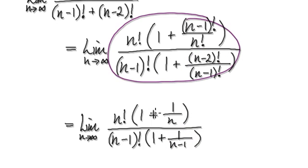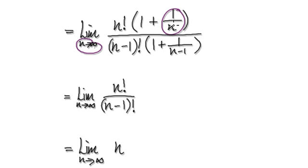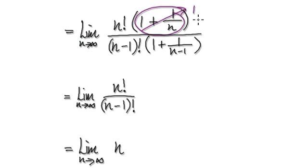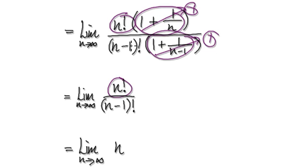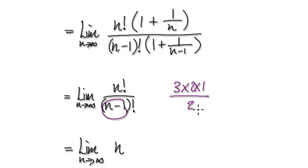This whole thing here simplifies to the tidied expression. Now as n tends to infinity, the 1/n terms are going to be 0, so each bracket heads towards 1. So 1 times n factorial is n factorial, and 1 times the other part is just that part. Now n factorial over n minus 1 factorial: n is one notch higher than n minus 1, like 3 times 2 times 1 over 2 times 1 — these cancel, leaving just n.